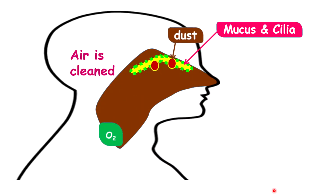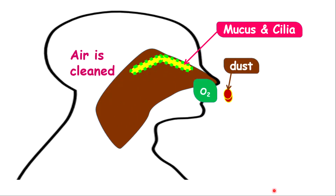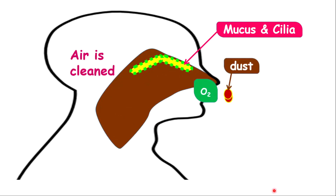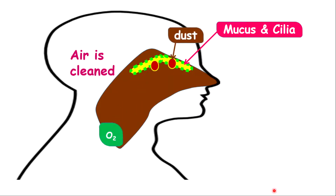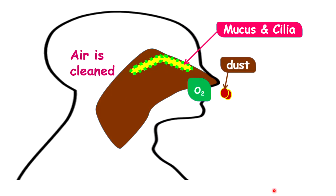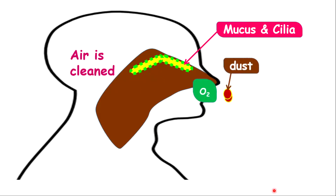Now let's look at what is happening to air as we breathe in. In the nasal cavity we have mucus and cilia. Air, which is a mixture of gases, also contains dust particles and foreign objects. The mucus will trap these dust particles and other objects, and the cilia will sweep them towards the nostril. So as air enters the nasal cavity, air is being cleaned.